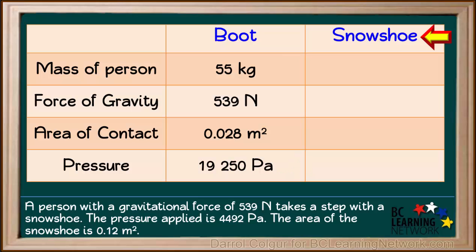Now we'll consider these quantities when she takes a step with a snowshoe. Her mass is still 55 kilograms. Here we'll ignore any difference in mass that would result by putting on the snowshoe. The force of gravity acting on her is still 539 Newtons. The area of contact of the snowshoe is 0.12 square meters. The snowshoe distributes the force over an area greater than 4 times that of the boot. Finally, the pressure the snowshoe applies to the snow is only 4,492 pascals. This is less than a quarter of the pressure applied by the boot. This low pressure applied to the snow means the snowshoe will not sink into the snow as much as the boot did.